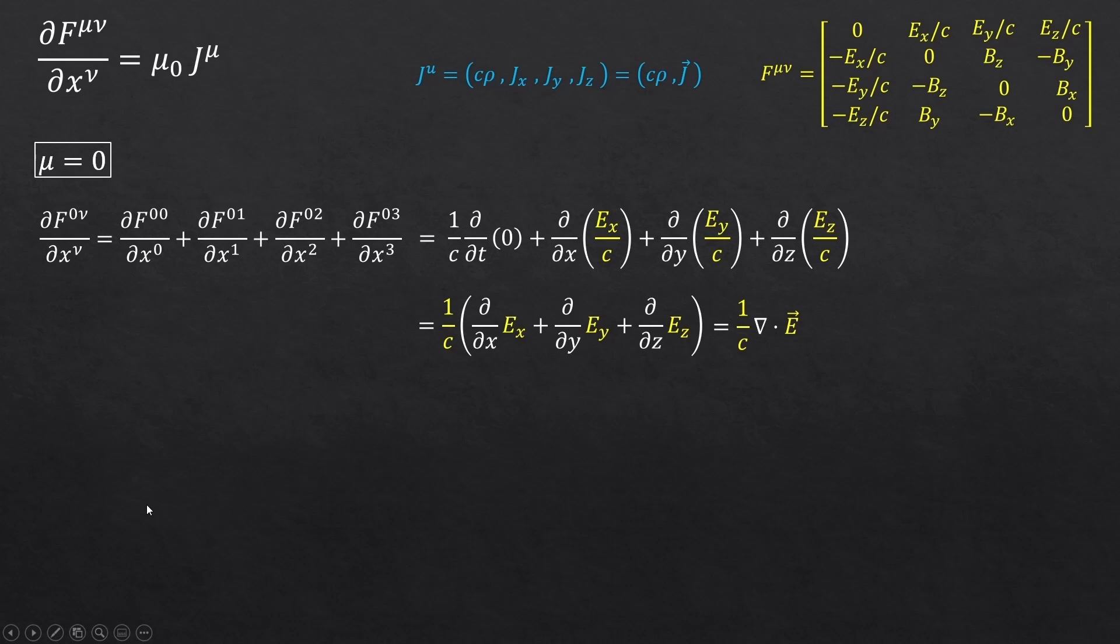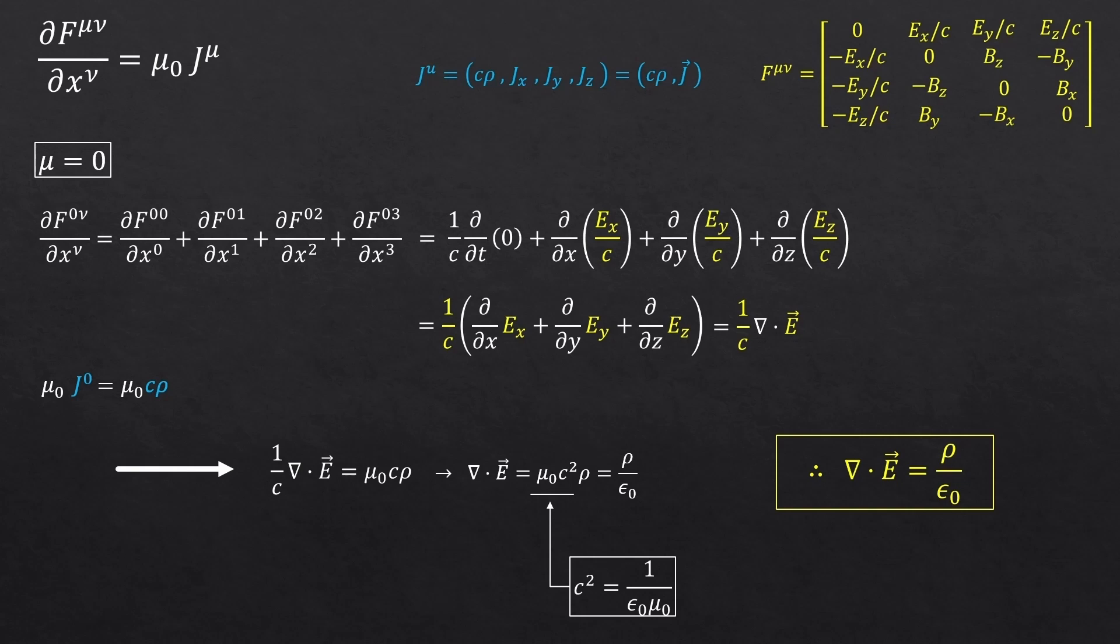The right-hand side of this equation is quite simple. We only got the index mu, right? So, mu0, by the way, this mu0 is a permeability of free space, not the index mu, so don't get confused. Mu0 c rho, because c times rho was the first element of the four current factors, right? So, now combining the left and the right-hand side, we'll obtain this expression. And if we move 1 over c to the other side, it'll become mu0 c squared rho. And according to this definition, we can simplify it as rho over epsilon naught. Epsilon is a permittivity of free space.